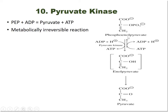Step 10, the last step of glycolysis, is catalyzed by pyruvate kinase. Because phosphoenolpyruvate is very unstable in its enol form, it rapidly converts into pyruvate. A phosphate from PEP is transferred to ADP, producing ATP. This is a metabolically irreversible reaction and yields the target product of glycolysis — pyruvate.